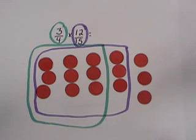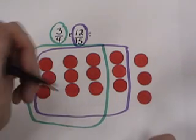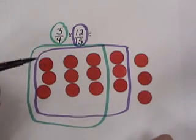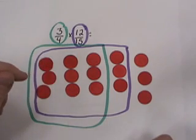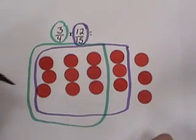That's the answer to our original question, but what does this represent? Remember, when we first started, we said that each counter represents 1 fifteenth. So let's count the counters inside the green area.